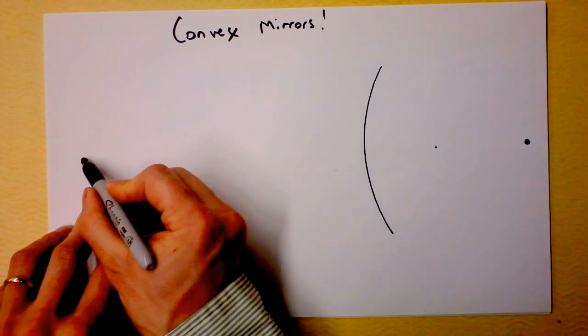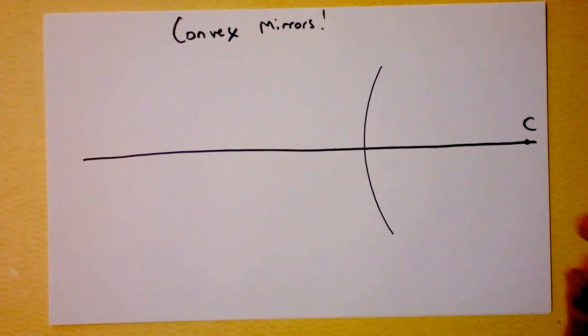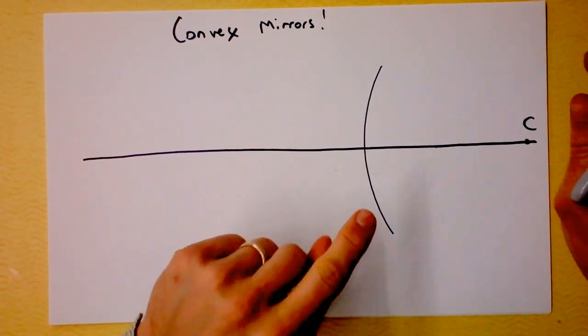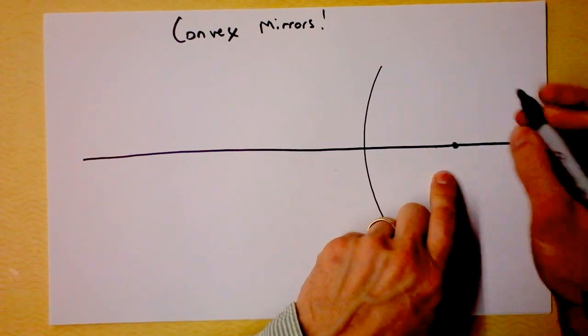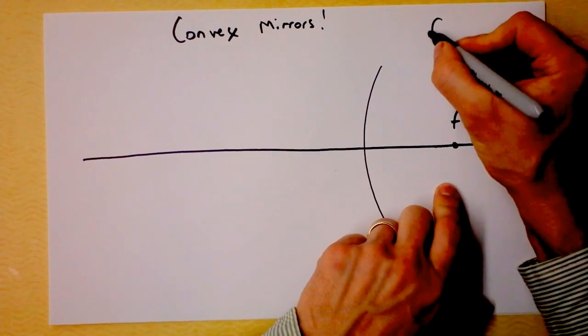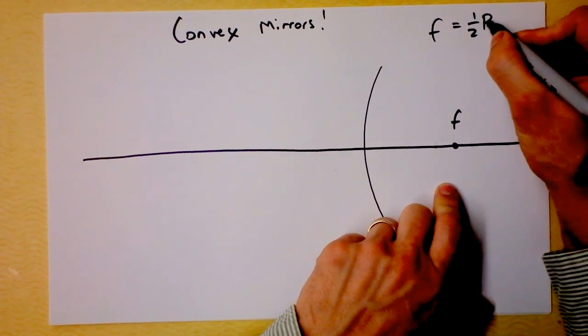And I'm going to give you an axis right here. That axis goes through normal to it. So there's C. But the thing is, the focal point is still over here. It turns out the focal point is half of the radius of curvature.